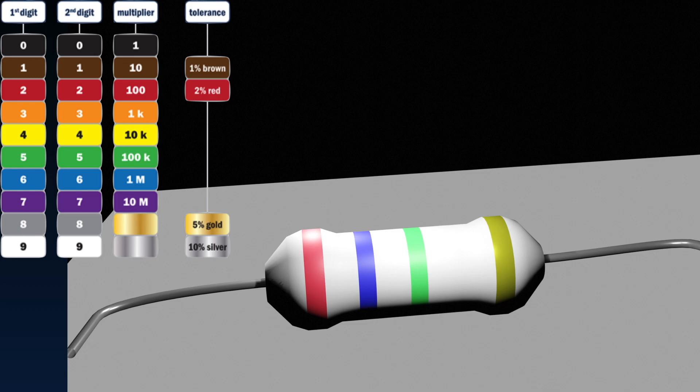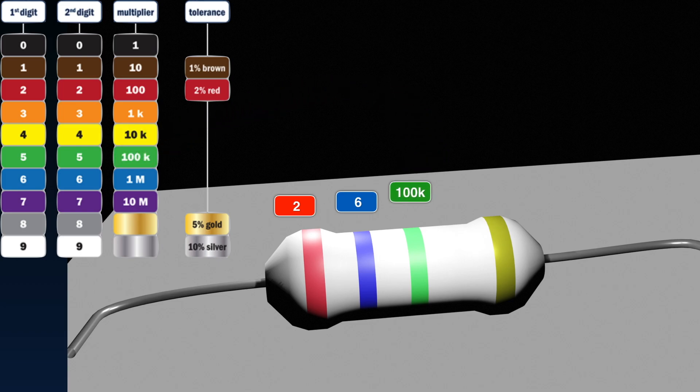Looking at the first digit, that's the column on the left, and looking at the band red, we see that the digit 2 there means that's the first digit of the value of the resistor. Similarly, the blue band indicates that the next digit is a 6. And then the third band is the multiplier. In this case, green means 100k. So, we have 2600k, or 2.6 megaohm resistor here.